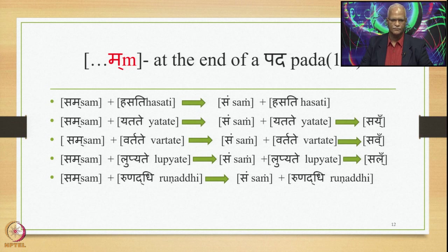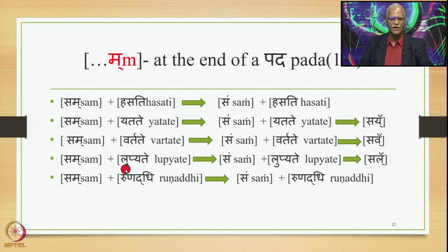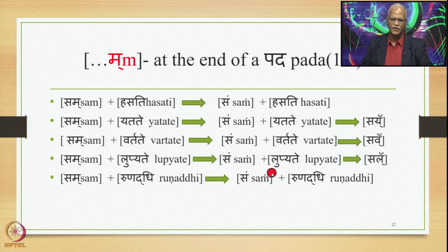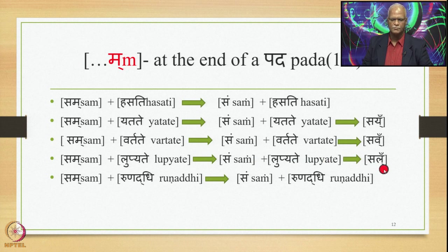Sam plus Lupyate: 8.3.23 applies, substituting Ma by Anuswara to give Sam Lupyate. Then 8.4.59 (Vapadantasya) substitutes this Anuswara by the nasal Parasavarana optionally, yielding Sam Lupyate (with nasal) and optionally Sam Lupyate (with Anuswara).